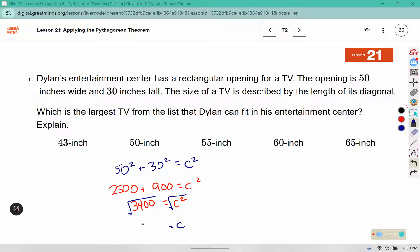If we add those two things together, we get 3,400, and to find the diagonal we need to square root, which gives us approximately 58.31. So the longest TV that can fit would be this 55 inches. 60 is too big and 65 is too large.